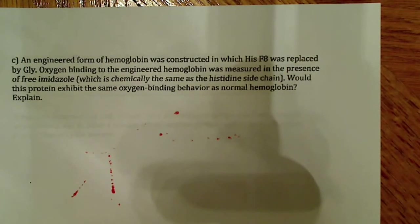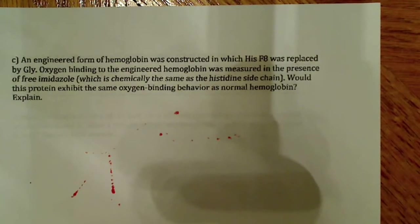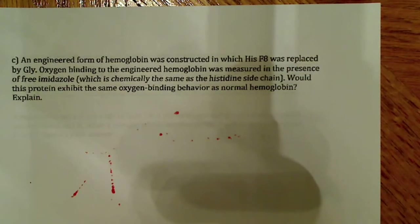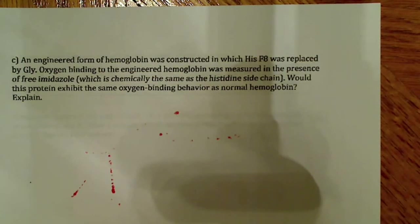By the time you get to the fourth oxygen, it's no problem to bind. We know that's a sigmoidal curve and that hemoglobin binds oxygen when the partial pressure of oxygen is high, and it releases oxygen when the partial pressure of oxygen is low — releasing oxygen into the tissue where it's needed — and when there's high oxygen pressure, it binds tightly, in places like the lungs.